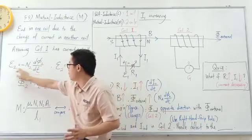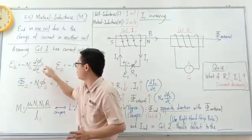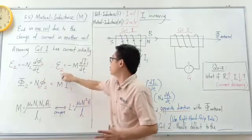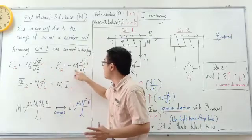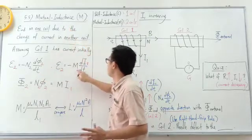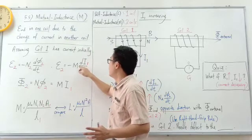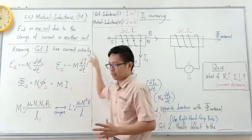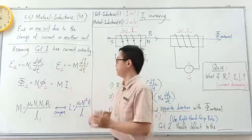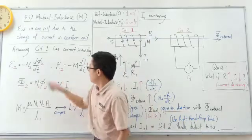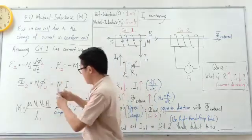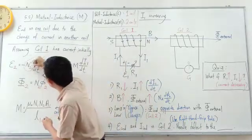The formula is: E2 equals negative M times dΦ2/dt, and also E2 equals negative M times dI1/dt, where M is the mutual inductance and dI1/dt is the change of current in coil one. From this formula, we can extract another relationship.